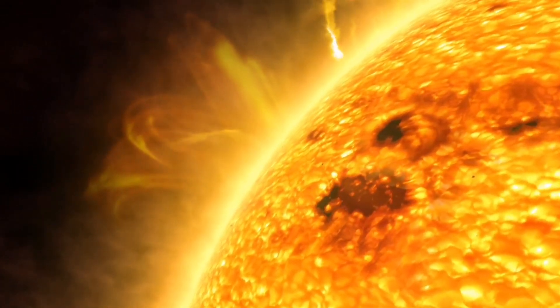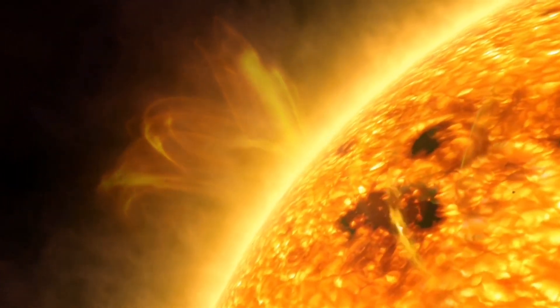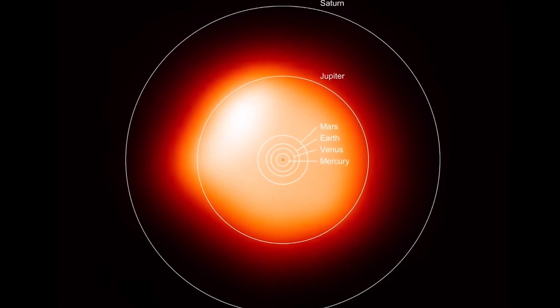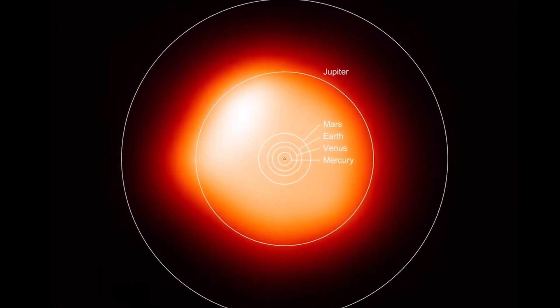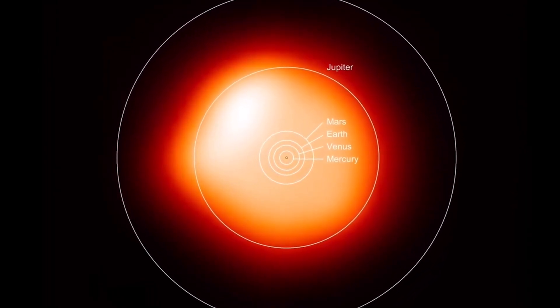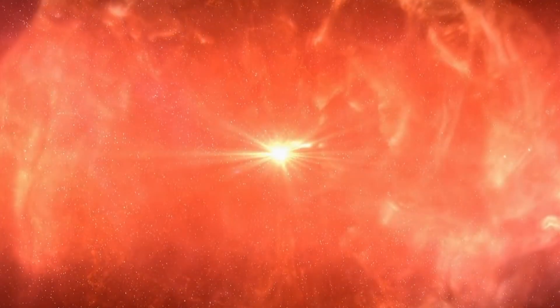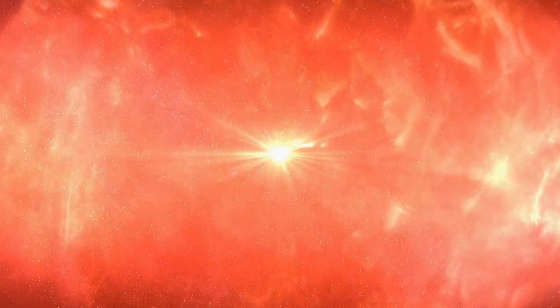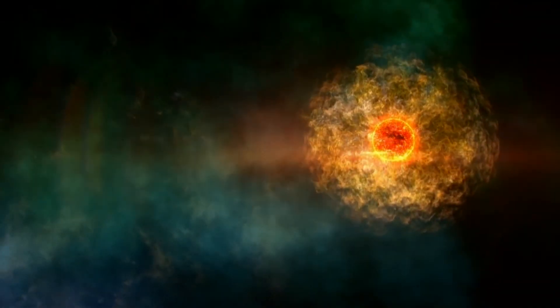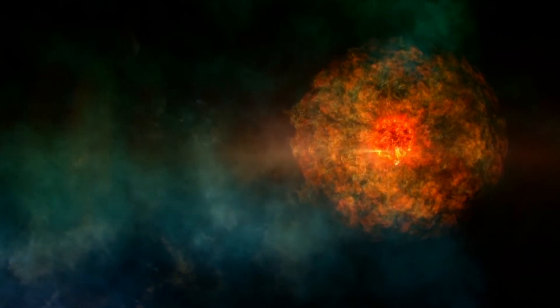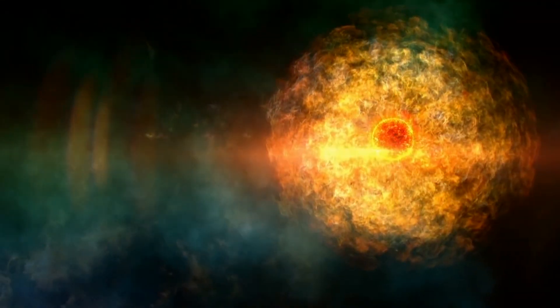The normally unseen elements deep within Betelgeuse's core are now at the forefront. There is a surge in the wavelengths associated with heavier elements, the birth of which signals a star nearing the end of its life. The presence of elements like iron, typically formed in the dying stages of a star's life, suggests that Betelgeuse's final act may be closing in much faster than we had thought.